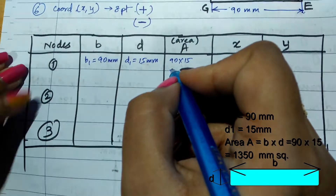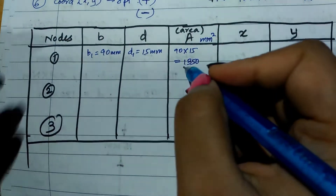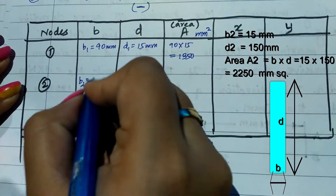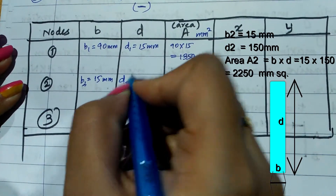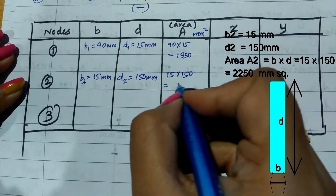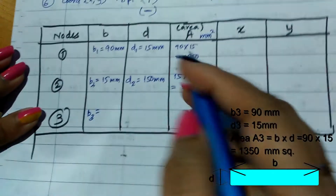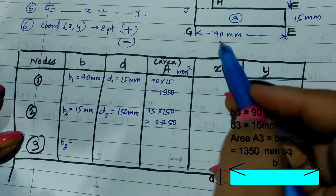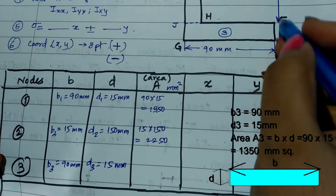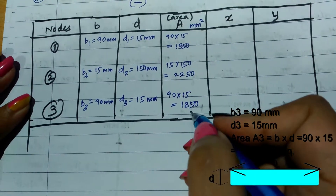Area of node 2 = 15 × 150 = 2250 mm². For node 3 (bottom flange): b3 = 90 mm, d3 = 15 mm. Area = 90 × 15 = 1350 mm².